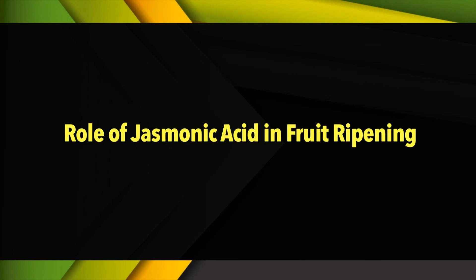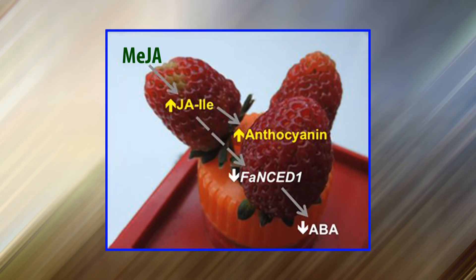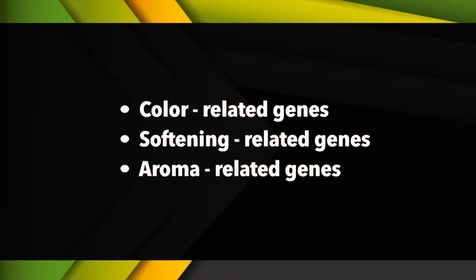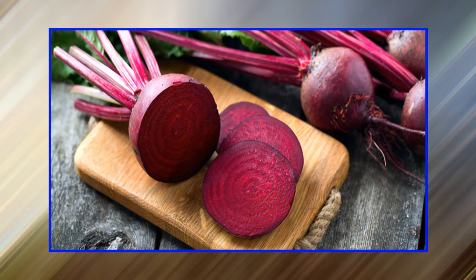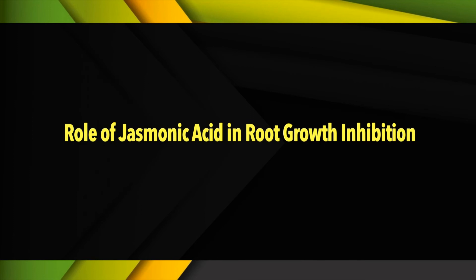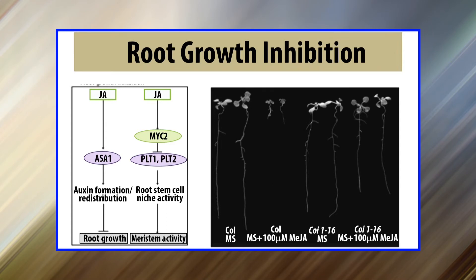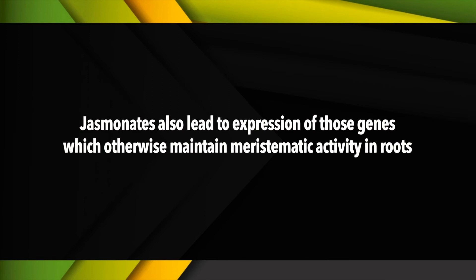Fruit ripening is a complex process regulated by a signal network. Jasmonic acid plays an important role in grapefruit coloring and softening by increasing transcription levels of several ripening-related genes — coloring-related genes, softening-related genes, and aroma-related genes — leading to enhancement in fruit anthocyanin, phenol, and aroma content and causing fruit softening. Regarding root growth inhibition, jasmonic acid induces root growth inhibition by stimulating auxin biosynthesis. Jasmonates also lead to expression of genes that otherwise maintain meristematic activity in roots, though this is not universal — in Arabidopsis, for example, jasmonic acid has no effect on root growth.